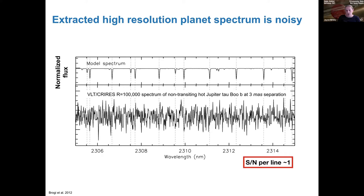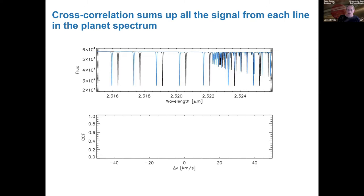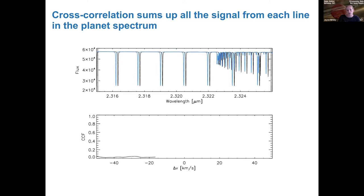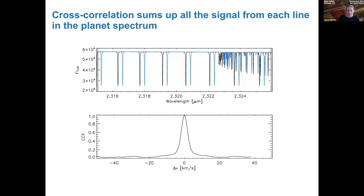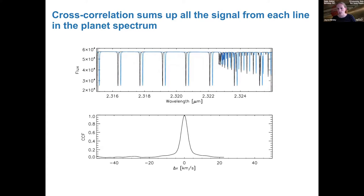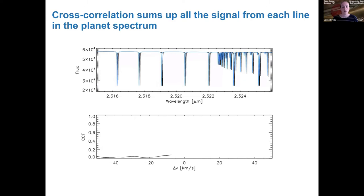That's where cross-correlation or template matching comes in. We take our observed spectrum — shown here in black, these are toy models — and we make a guess of what the planet atmosphere looks like, scanning the model through the spectrum until it perfectly overlaps. We create a cross-correlation function; when they perfectly overlap we get a very high signal. Dividing the cross-correlation function by its standard deviation gives effectively a signal-to-noise. Cross-correlation allows us to add together all the signal from all the lines.